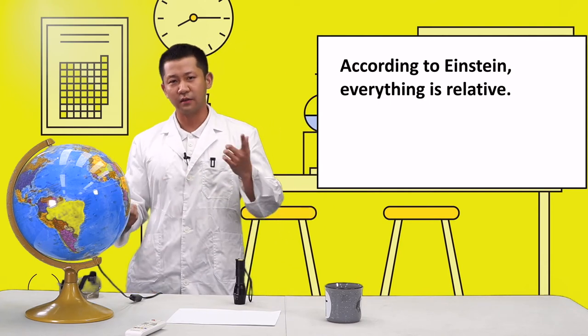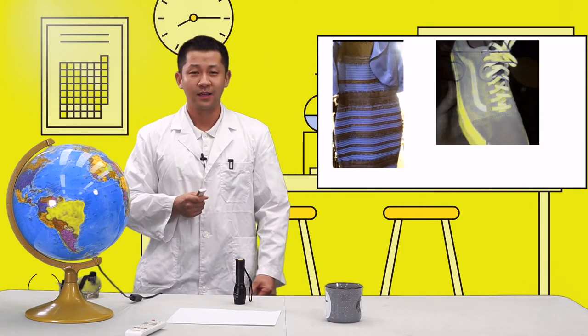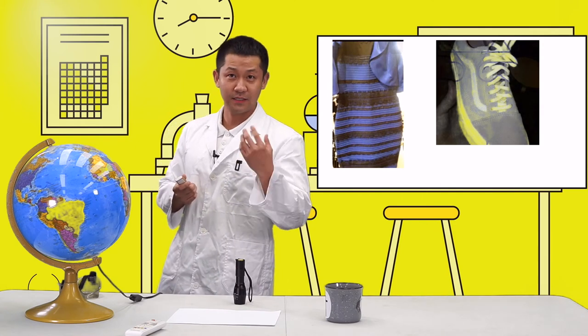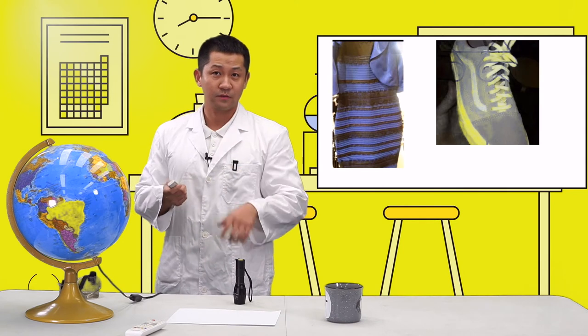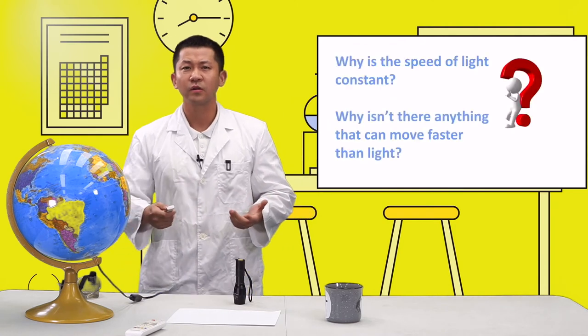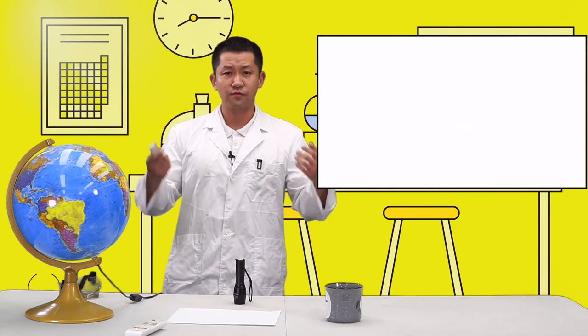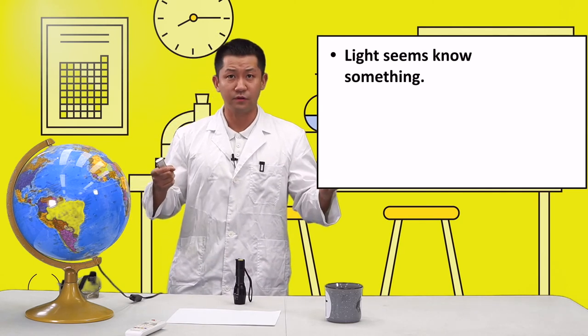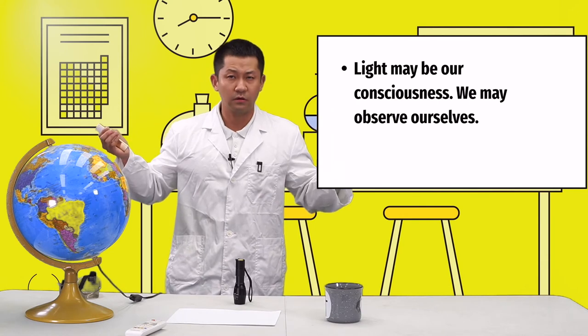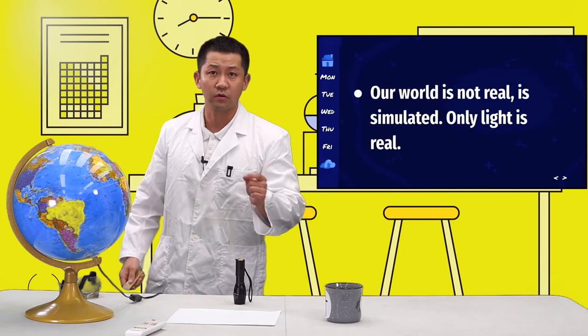According to Albert Einstein, everything is relative. You've probably seen these pictures before: a dress and sneaker shoes. For me, I see purple and dark brown for the dress, and mint and pink for the shoes. That makes me think: why is the speed of light constant? Why isn't there anything that moves faster? There are probably three possible explanations. Maybe the speed of light knows something we don't. Second, probably the speed of light is our consciousness. Last, maybe our world actually is not real but simulated, like a computer game, but only light is real.